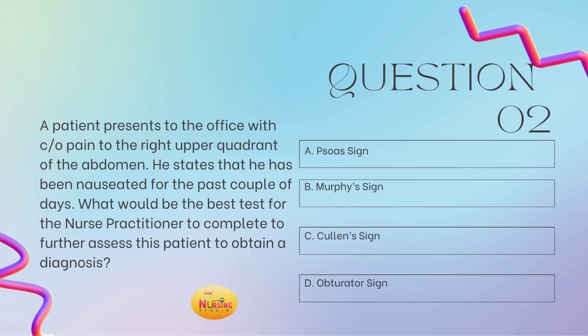Question number two: a patient presents to the office with complaints of pain to the right upper quadrant of the abdomen. He states that he has been nauseated for the past couple of days. What would be the best test for the nurse practitioner to complete to further assess this patient to obtain a diagnosis? Is it A, Psoas sign; B, Murphy sign; C, Cullen sign; or D, obturator sign? Take a moment and tell me what you got.